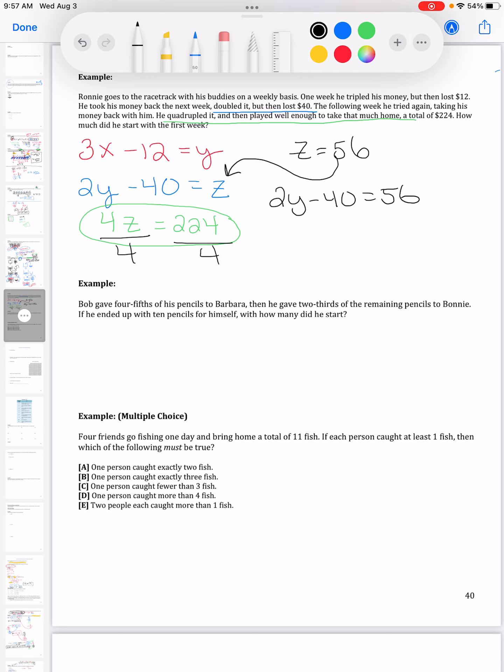So that means I'm going to start with this 4Z. I can divide by 4 to give me Z equals 56. So then I can plug that in to this second, the blue equation, and I can solve for Y.